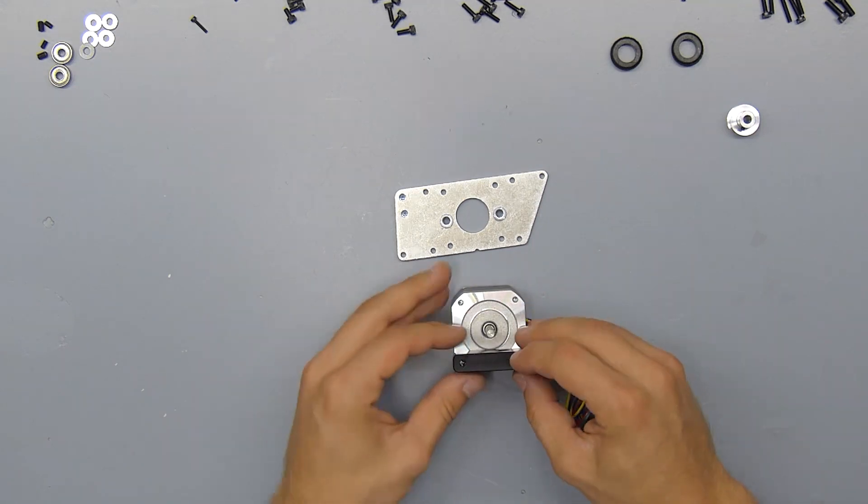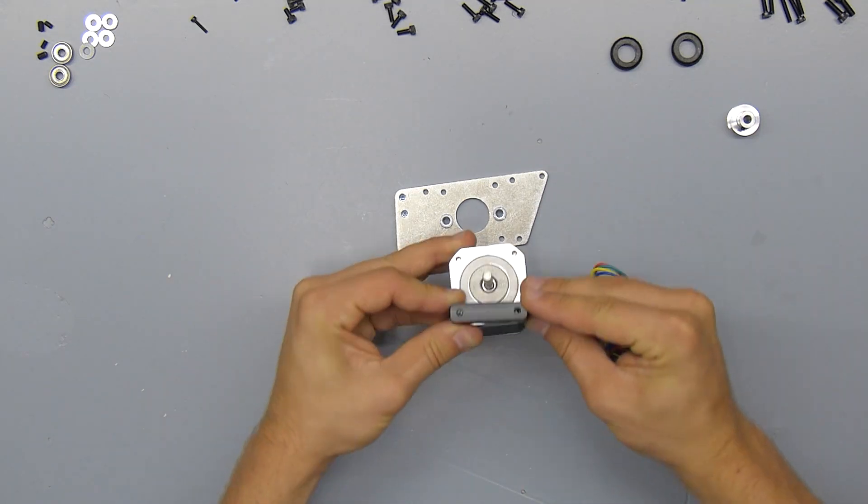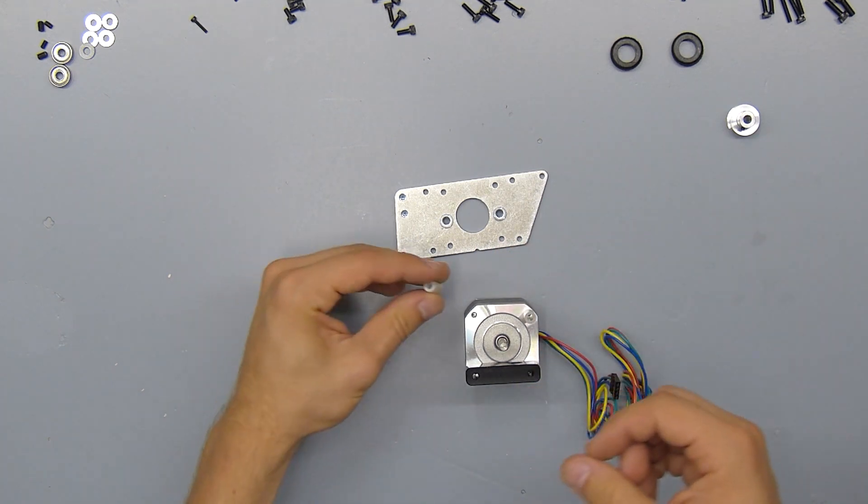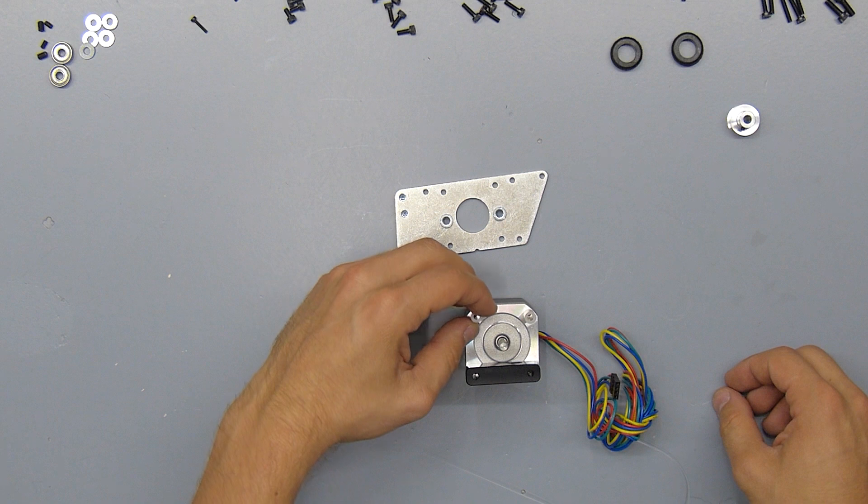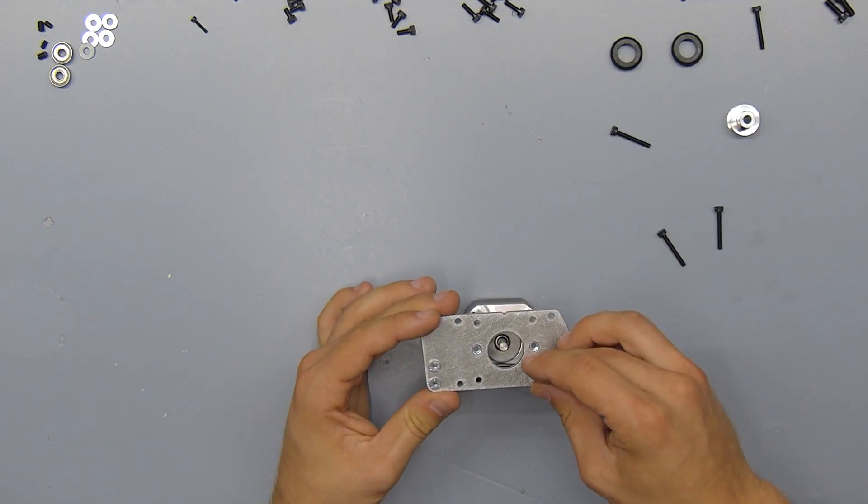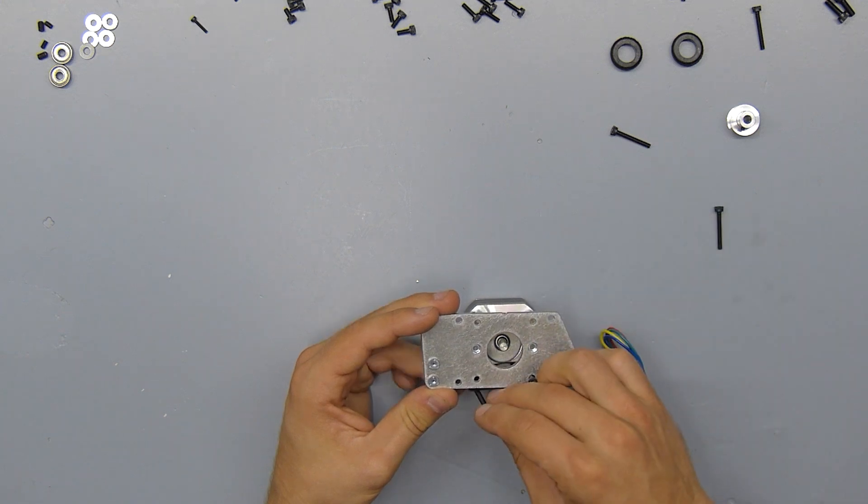The first part we're going to install is the black delrin z-nut, like this, and the two nylon spacers. These three parts are going to be sandwiched between the motor and the aluminum plate, and we're going to use the 22mm M3 screws to screw everything together.